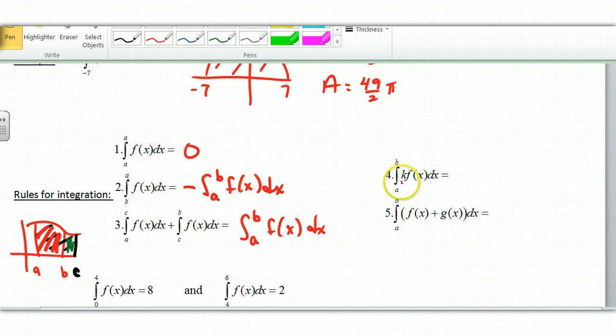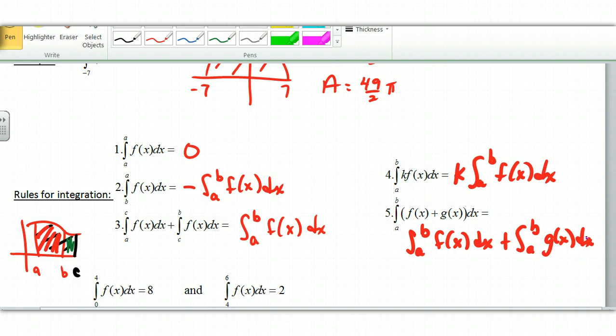From our derivative days, this number four, the constant just goes along for the ride. Same thing here, so I can take it out in front. I cannot do that with variables. You can never pull variables out. You can only pull constants out. Be careful with that. And then also I can take the integral of a sum and that's the same thing as the sum of the integrals. So a to b of f of x. I need a dx on that one because I need the width of the rectangles or I'm adding up the area, I should say. And then this one would be a to b of g of x dx. So the integral of the sum is the sum of the integrals.